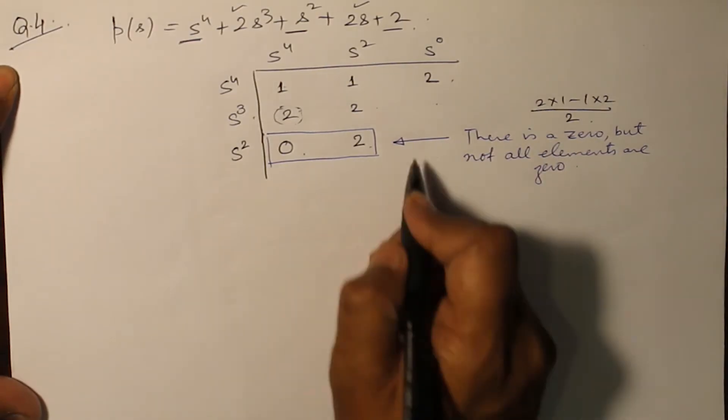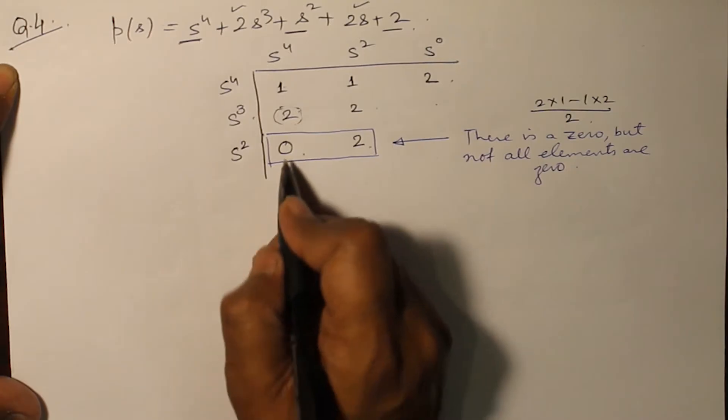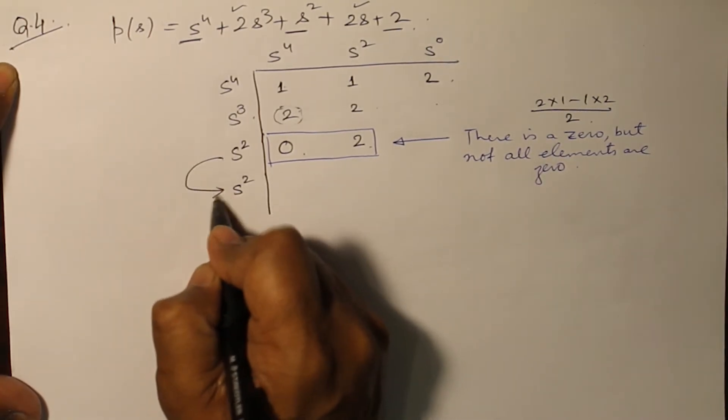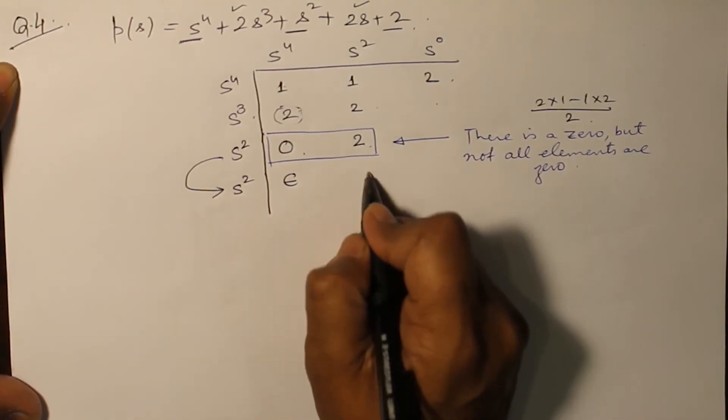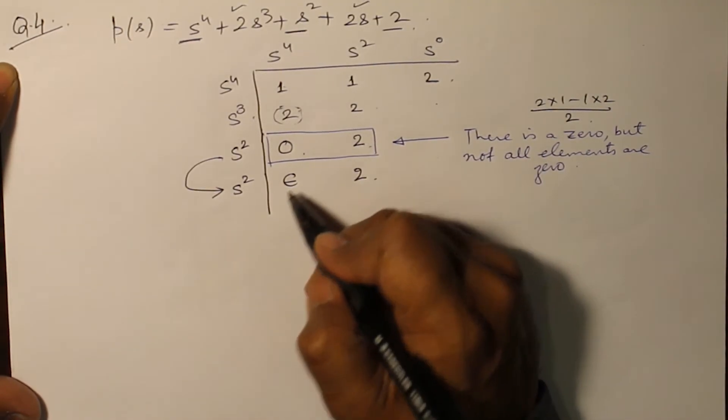For the row, if all the elements are not zero, then replace it by epsilon. So this is rewritten with epsilon and 2 is brought as it is.